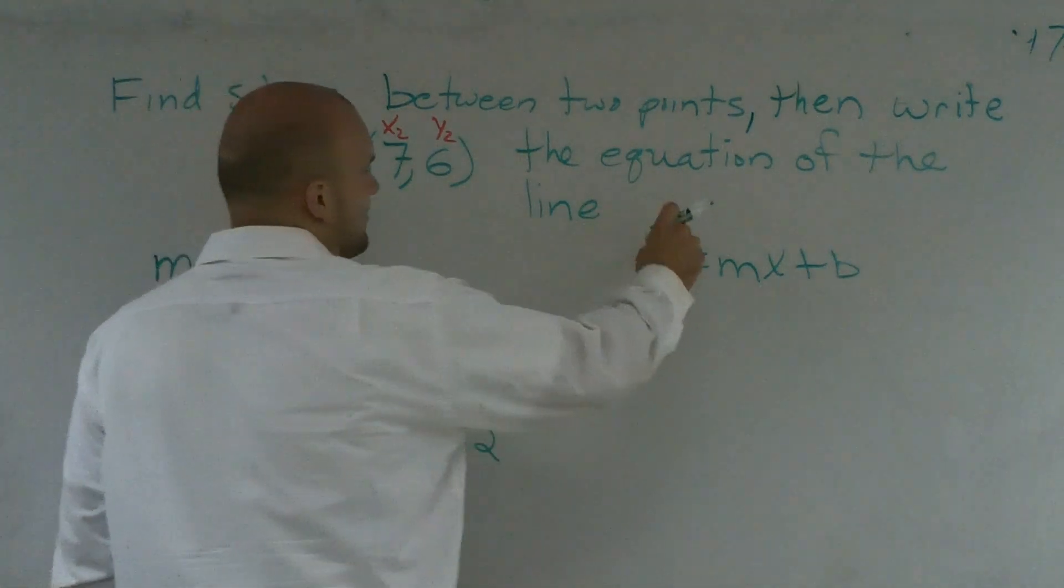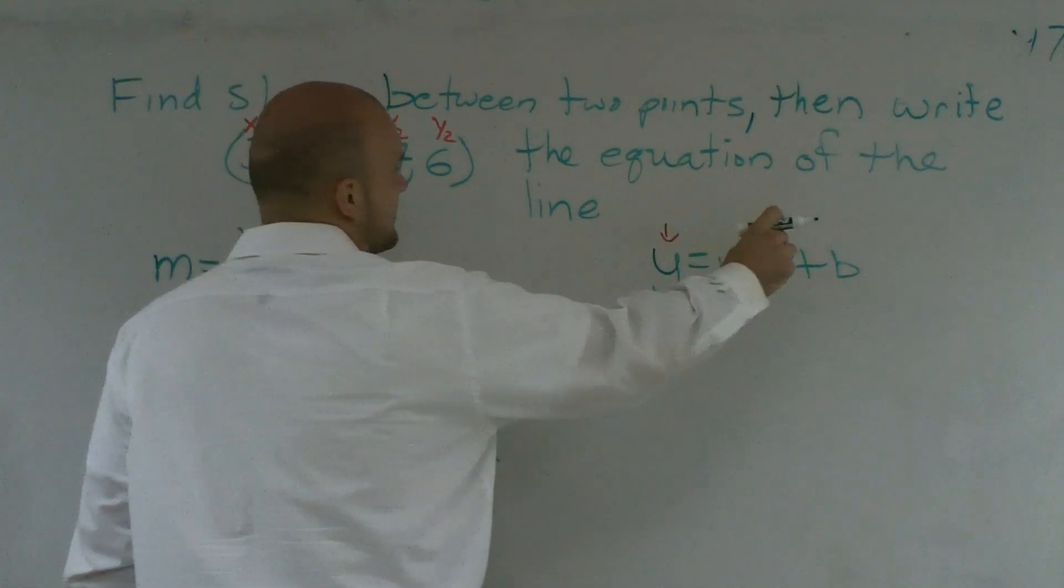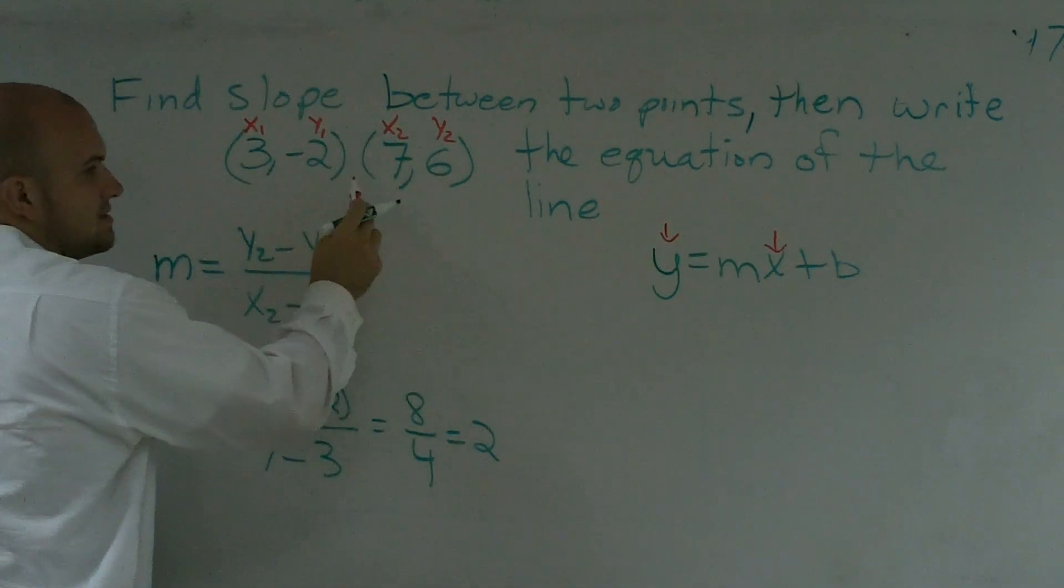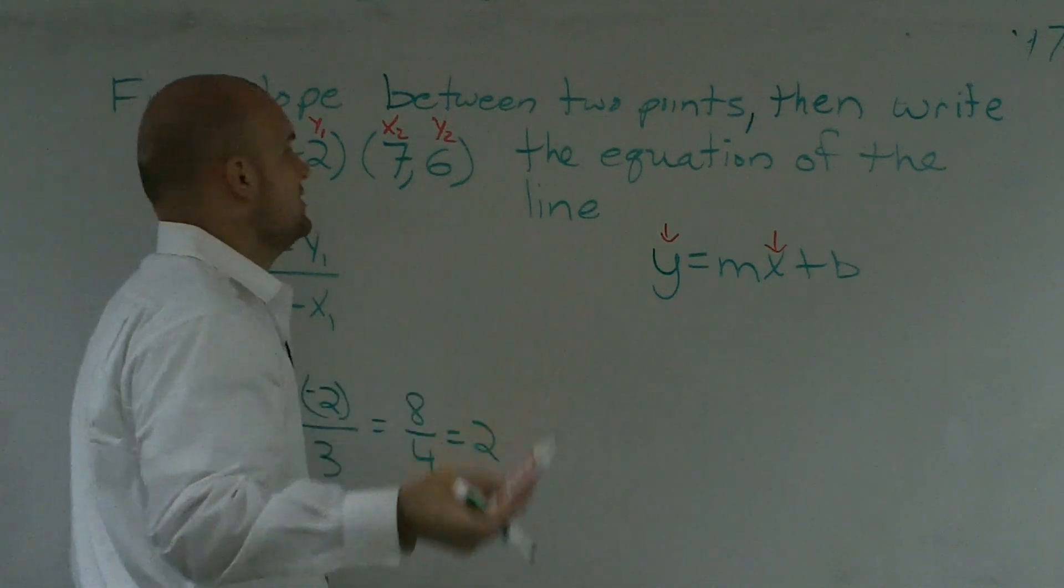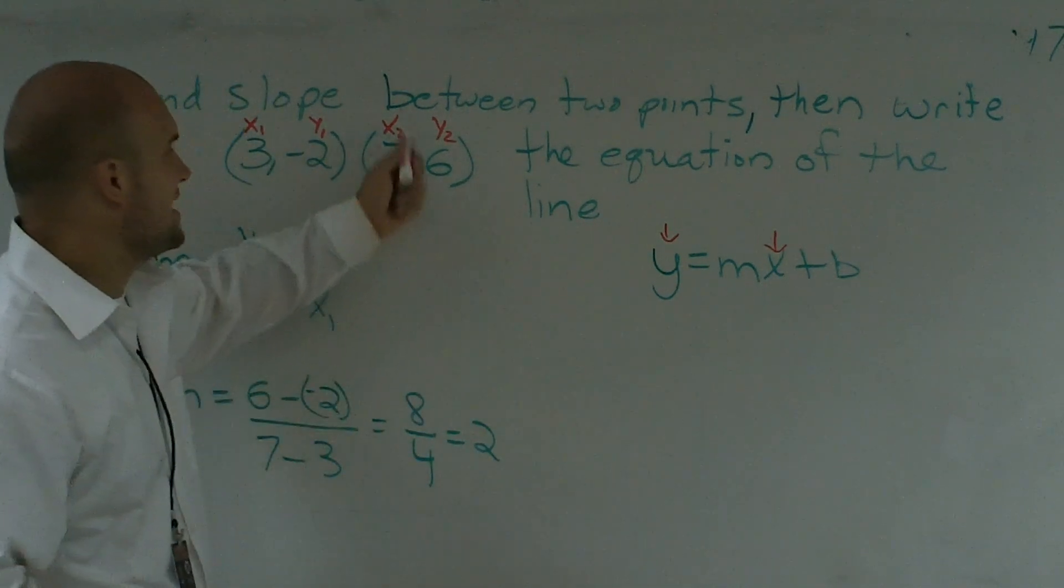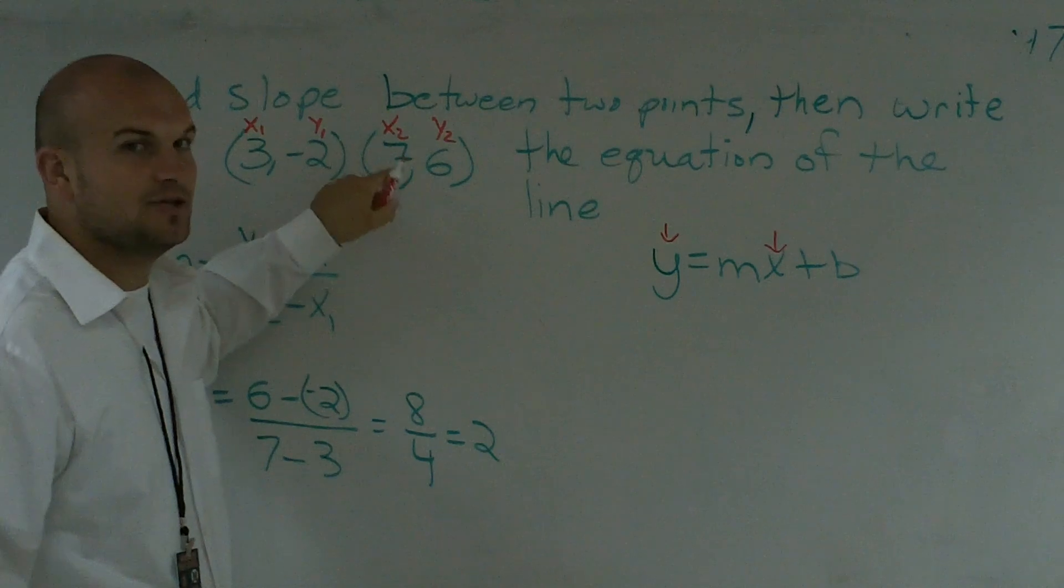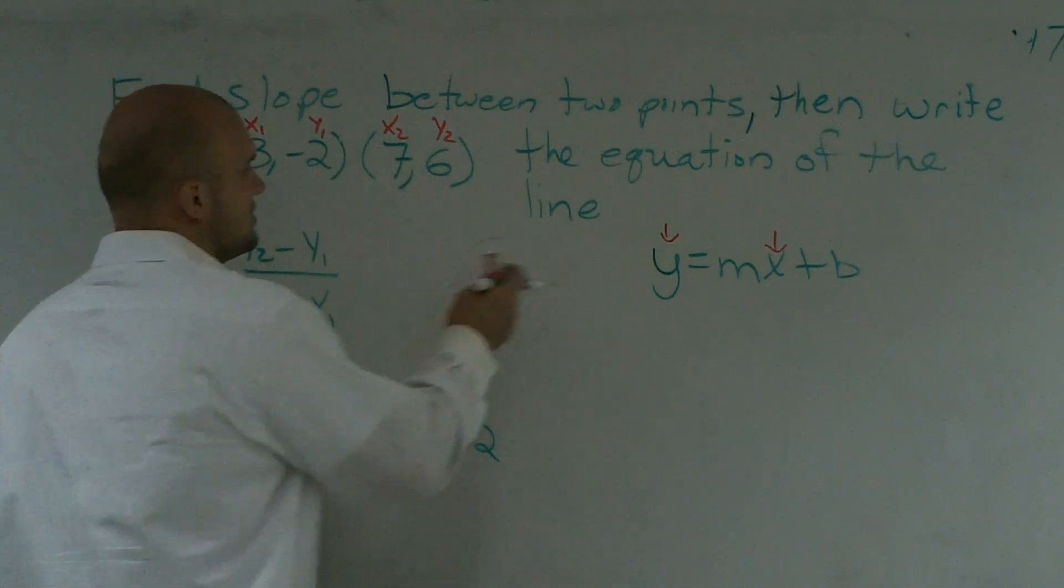So I know that my x and my y, those are both two points. So I just need to pick a point that I want to use. I'm going to pick x2 and y2. It doesn't really matter, but I'm going to pick these points. So I'm going to say, all right,